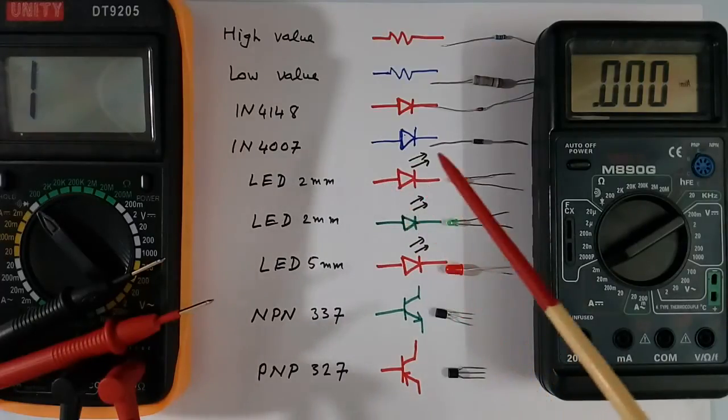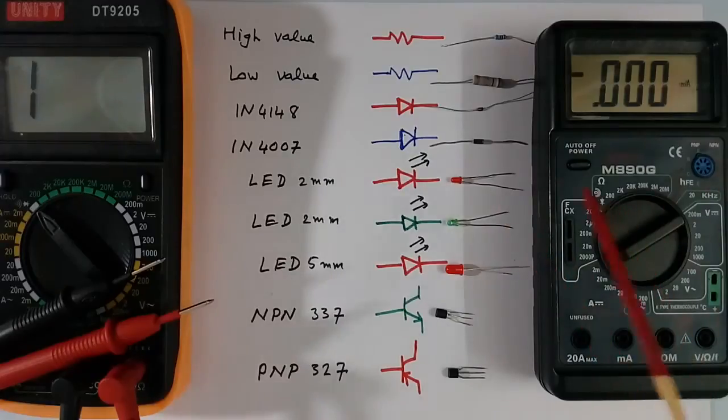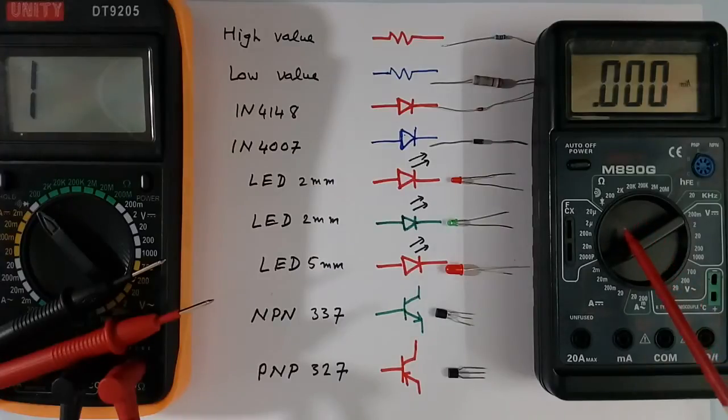Because forward drop depends upon the current. I will use 2 multimeters. One multimeter will measure the current at what current diode drop is being measured. And other will show the diode drop.